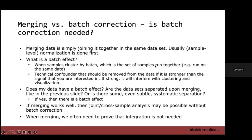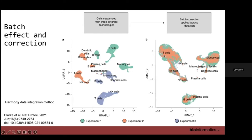What is a batch effect? How do you know that you have one in the data? Generally, the phrase 'batch effect' means that samples are clustering by batch. A batch is the set of samples run together in some way, like run on the same date. A batch is a technical confounder that should be removed from the data, especially if it's stronger than the signals you're interested in. For instance, if we're interested in cell types, we'd like them to group together, but because the batch effect is so strong, it's actually grouping by batch instead of by cell types.